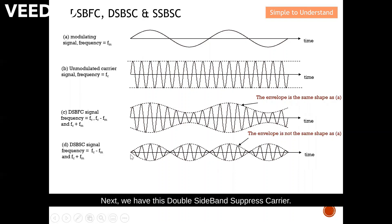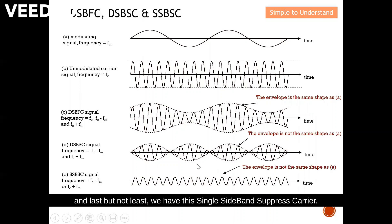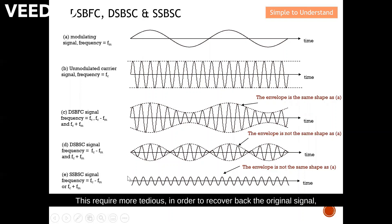For double sideband suppressed carrier, the carrier is suppressed — the envelope no longer has the same shape as the modulating signal. For single sideband suppressed carrier, again the envelope does not have the same shape as the modulating signal. This requires more complex processing to recover the original signal, which I will explain in the next few videos.